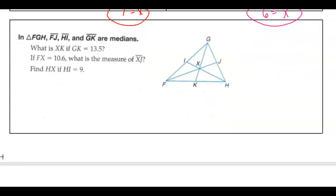In triangle FGH, it says that we have medians. So we want to find XK. So that's the bottom portion. If we know that G to K, we know the whole thing is 13.5. So remember, if GK is 13.5, that's going to be 1 third. So I want to divide that by 3.